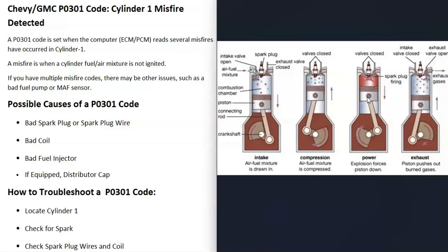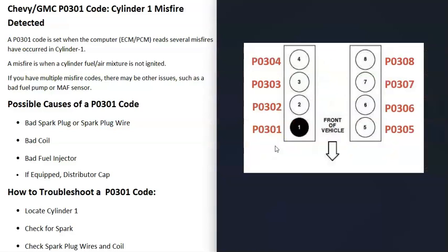The P0301 code points specifically to the number one cylinder. If you were to get a P0302 code, that would point to the number two cylinder, and so on.